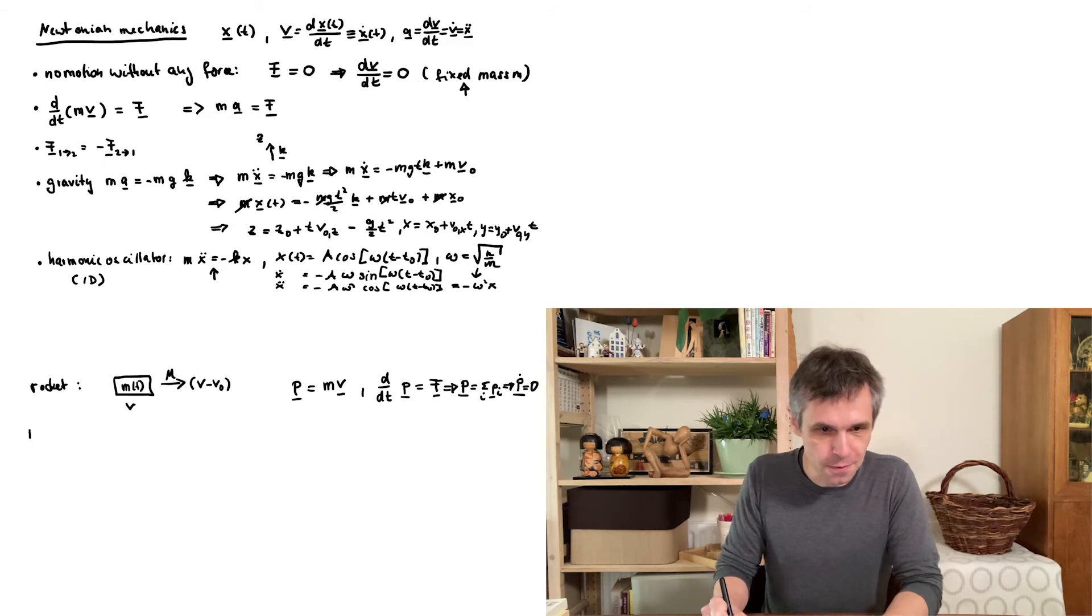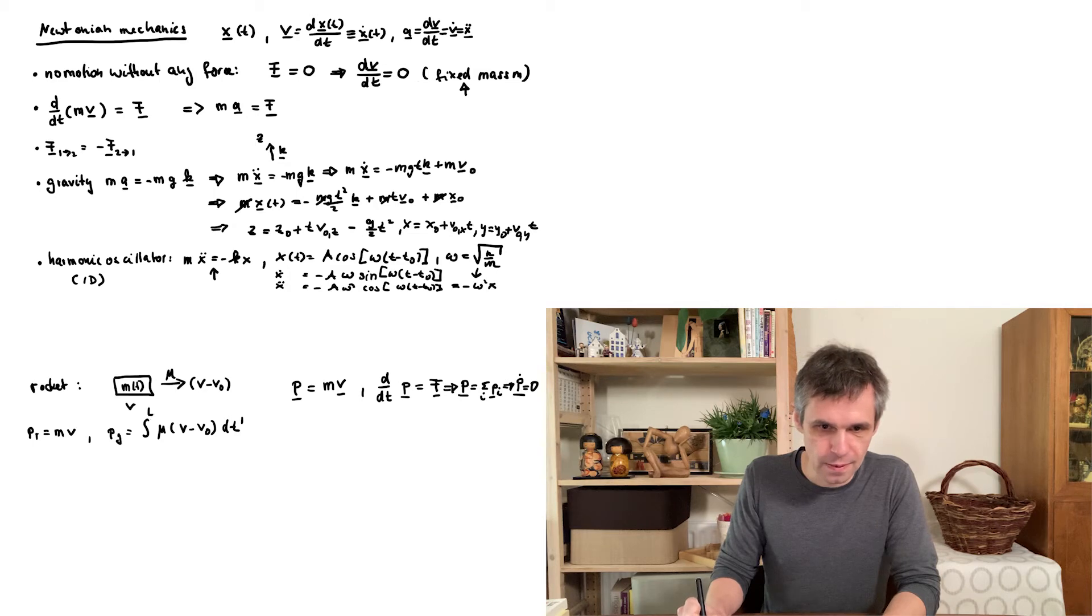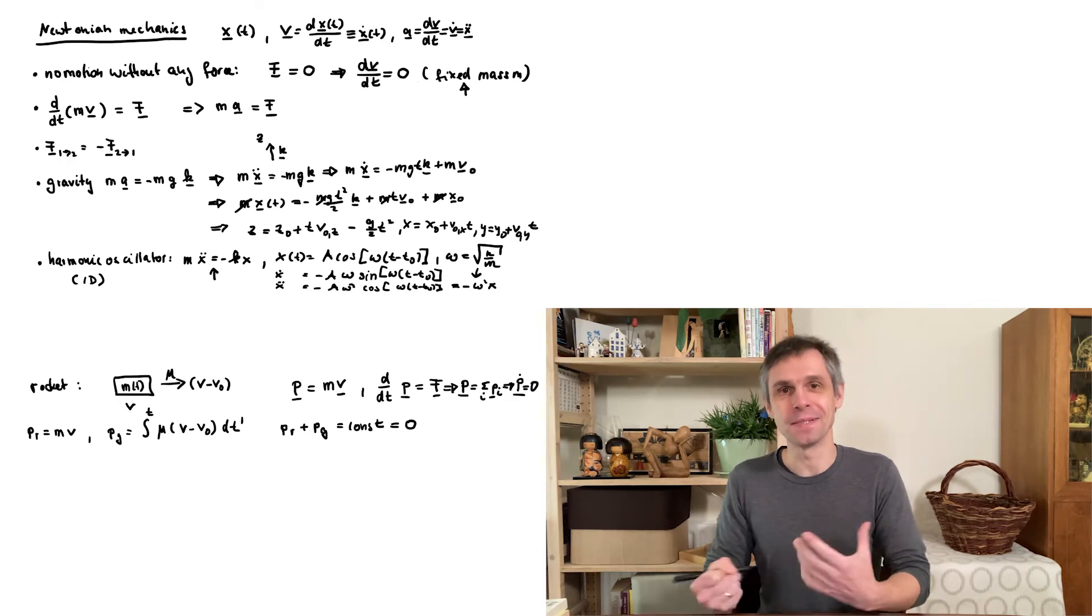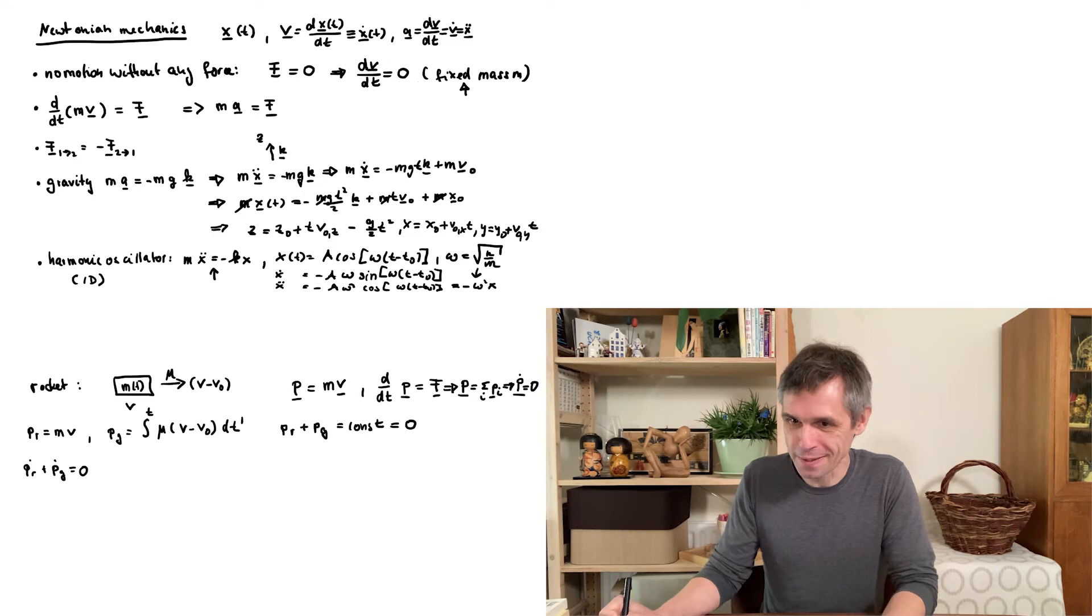Now the momentum of the rocket is just m times v. And the momentum of everything which is being expelled, let's call it the gas, can be written as an integral. We can simply collect everything which is being expelled at any point of time up to the time that we're interested in. And now we can simply say that these two add up to a constant. And let's just say that maybe initially this is just zero. So we start from the system at rest. Now we can simply take derivatives.